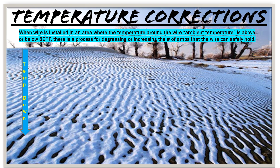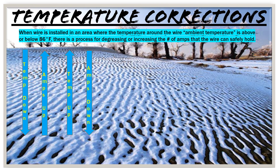If the temperature is down — say you're below 86 degrees Fahrenheit — the allowable ampacity actually goes up; you're able to carry more amps safely because the temperature is lower around the conductors and the insulation. If the temperature goes up, then the amps go down — you're actually going to be able to carry less amps safely at a higher temperature, because of the heating and degradation of the insulation and the conductor.